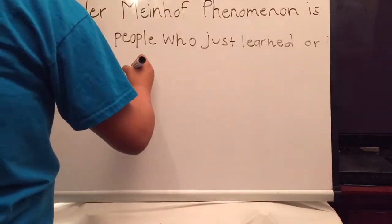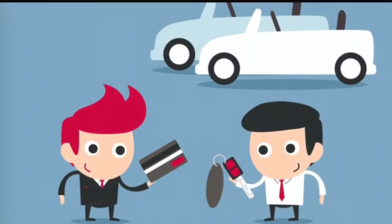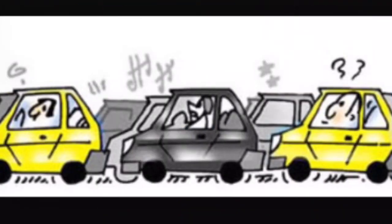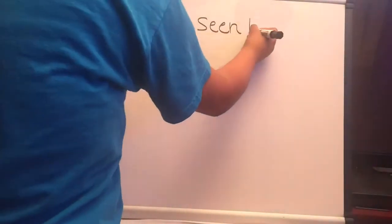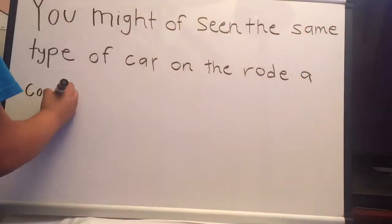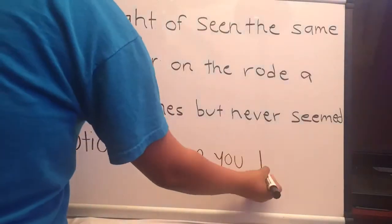For example, if you or a family member buy a car, you seem to notice that other people drive the same type of car. You might have seen the same type of car on the road a couple of times but never seemed to notice because you had other things on your mind.